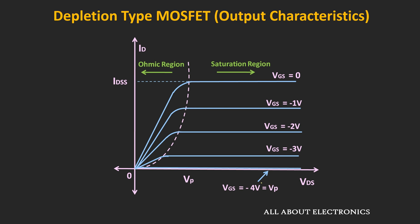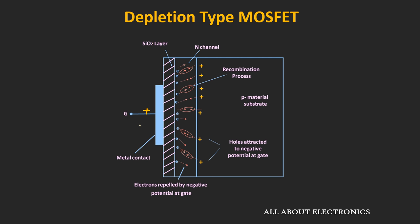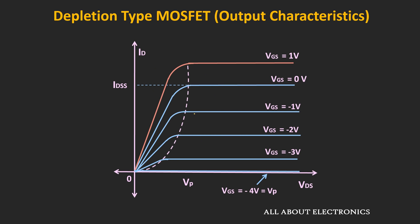The drain or output characteristic of the MOSFET looks quite similar to the JFET. But this MOSFET also works for positive values of Vgs. Whenever we apply a positive voltage at the gate terminal, the electrons which are minority carriers in the P-type substrate also get attracted towards the N-channel. Due to that, the number of free electrons in the N-channel increases, effectively increasing the flow of current. So for positive values of voltage Vgs, the drain current Id will be even more than IDSS.